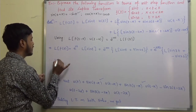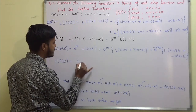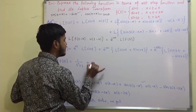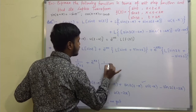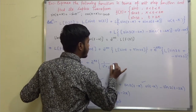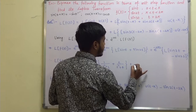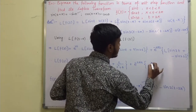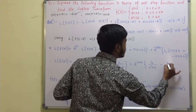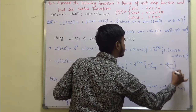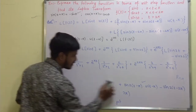Therefore, L{f(t)} = 1/(s²+1) + e^(−πs)·[1/(s²+1) + 2/(s²+4)] + e^(−2πs)·[3/(s²+9) − 2/(s²+4)]. This is the required Laplace transform for the given function.